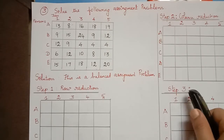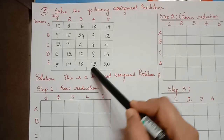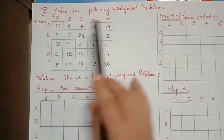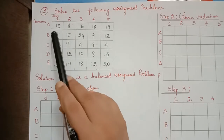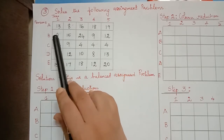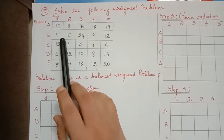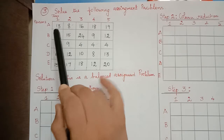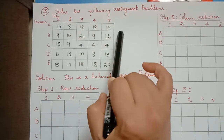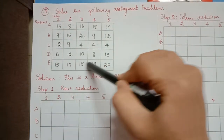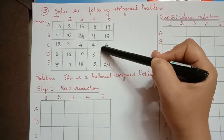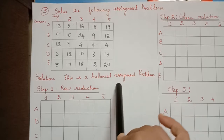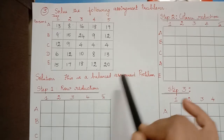Dear students, this is a minimization problem. First we have to check whether this is a balanced or unbalanced assignment problem. There are five rows and five columns, so this is a balanced assignment problem.